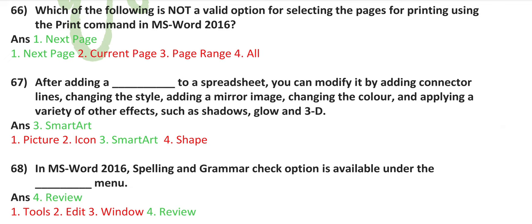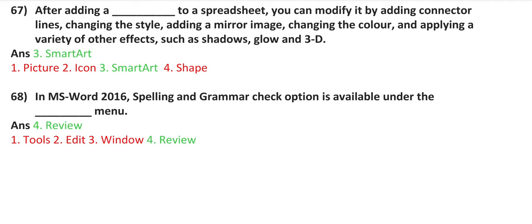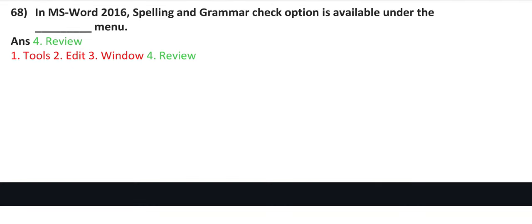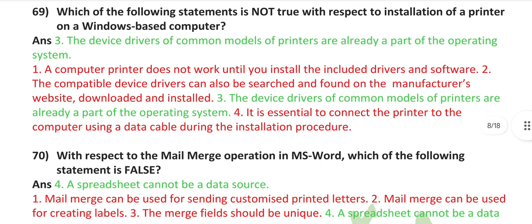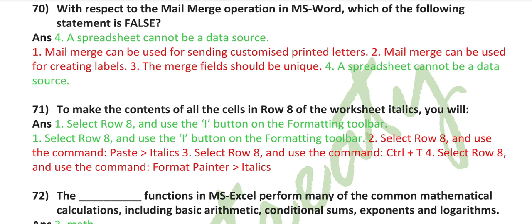Which of the following is not a valid option for selecting the page for printing using the print command in MS Word 2016? Next page. After adding a smart art to a spreadsheet, you can modify it by adding connector lines, changing the line style, adding a mirror image, changing the color, and applying a variety of other effects such as shadow, glow, and 3D. In MS Word 2016, the spelling and grammar check option is available under the review menu. Which of the following statements is not true with respect to installation of a printer on a Windows-based computer? The device drivers of common models of printers are already a part of the operating system. With respect to the mail merge operation in MS Word, which one of the following statements is false? A spreadsheet cannot be a data source.